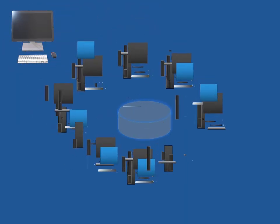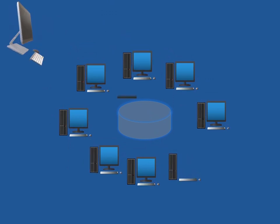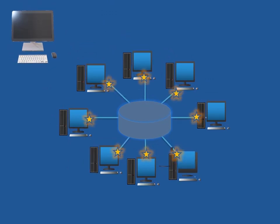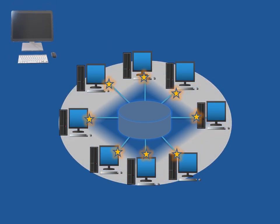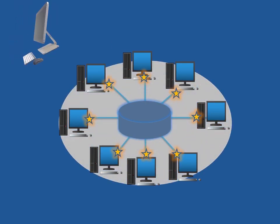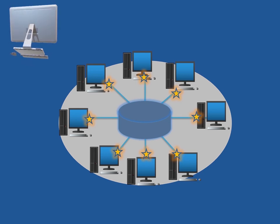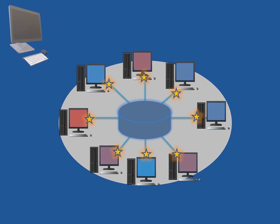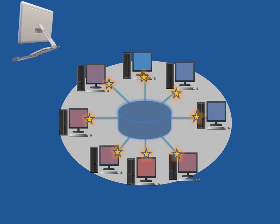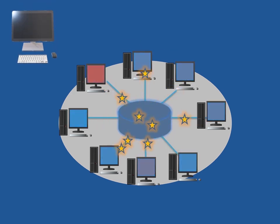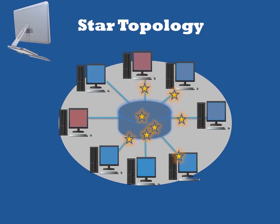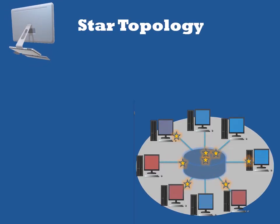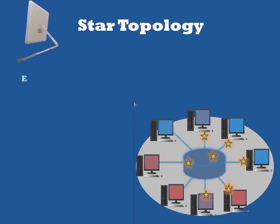In star topology, all the devices are linked to a single hub over a cable. This hub is the central node, and all other nodes are connected to it. If N devices are connected to each other in star topology, the number of cables essential to connect them is N, so it is easy to set up. Each device needs only one port to connect to the hub.